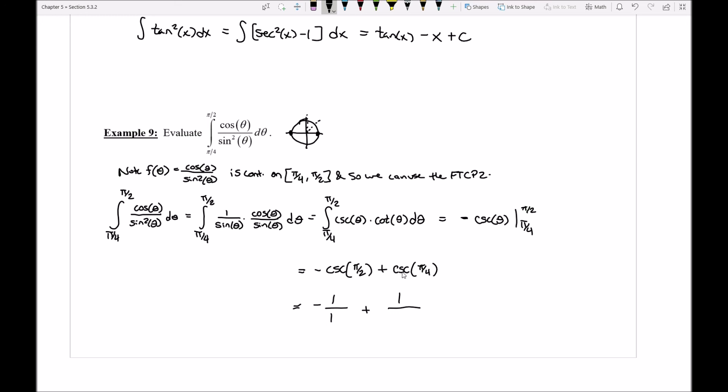The sine at pi over 4 is going to be square root of 2 over 2, and so I can actually go ahead and just simplify this down to look like the following.